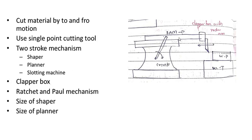The clapper box: when the tool moves forward, a cutting stroke occurs and the tool cuts the metal on the work piece. During the return stroke, the tool should not rub on the work piece as that would deteriorate the surface finish. So the clapper box lifts the tool when the forward cutting stroke is completed. The RAM then returns back without rubbing the tool on the work piece, and then the next cut is performed.